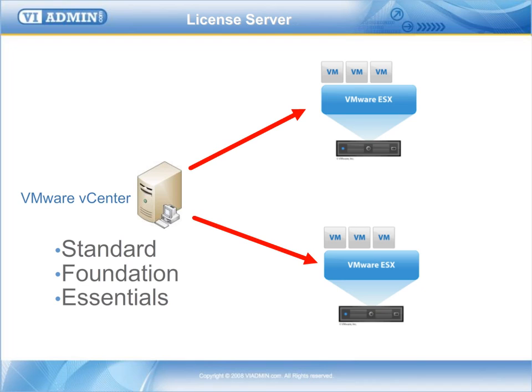License keys are now 25 characters instead of complex text files. The license server is built into vCenter, and you only have one license key for each edition of VMware vSphere. There are no feature keys like in VMware's virtual infrastructure. The license keys have an encoded CPU quantity inside the key, so one key can unlock whatever level of vSphere you purchase and for however many CPU sockets you purchased it for. VMware has moved to licensing per CPU, and you'll see how to configure licensing later in the video series.